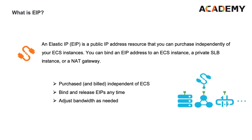An Elastic IP, EIP, is a public IP address resource that you can purchase independently of your ECS instance. You can bind an EIP address to Alibaba Cloud VPC type ECS instances, NAT gateway, and private server load balancer.